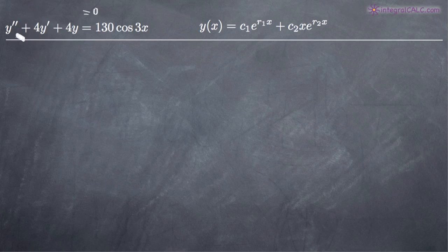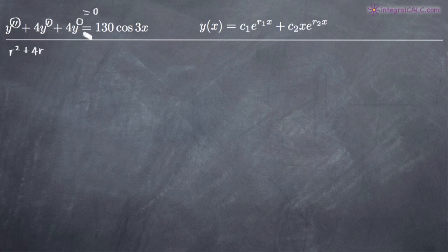The way we'll do that is to convert y double prime, y prime, and y into r variables. I count the number of hash marks on the y variable. Two hash marks becomes r squared. One hash mark becomes r to the first power, which is just r. Zero hash marks becomes r to the zero, which is one. So the y here just becomes 4 times 1, which is 4. And we set that equal to zero instead of what we have on the right-hand side, then solve for r.